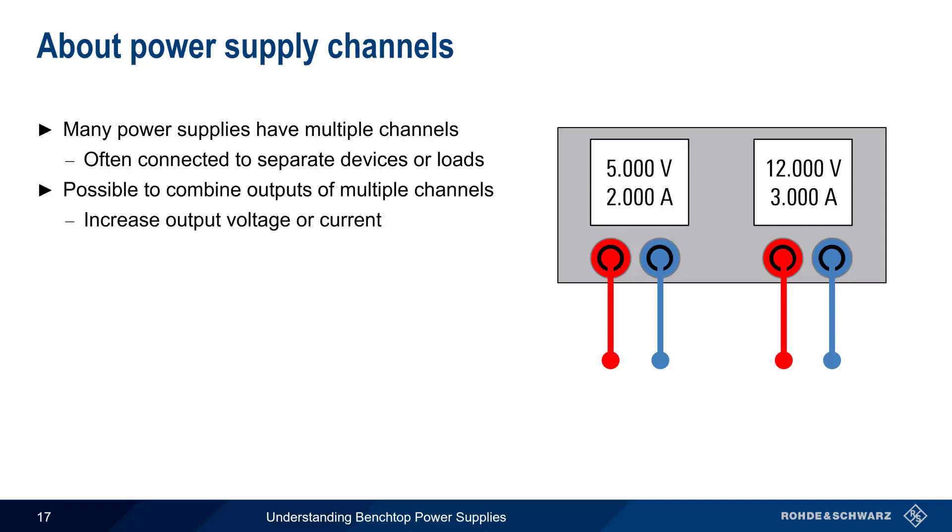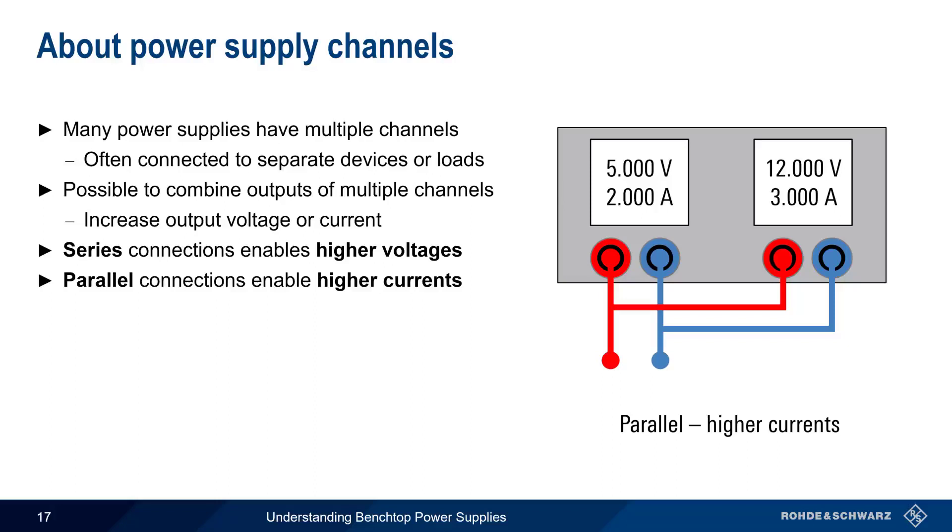There are two ways power supply channels can be combined. If the channels are connected in series, this enables higher voltages. On the other hand, if the channels are connected in parallel, this enables higher currents. These connections are typically made externally, although in some cases, the connections may be made within the supply itself.